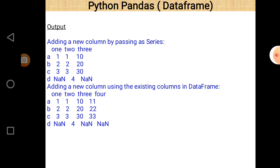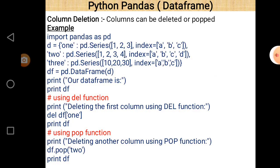Next is column deletion. If you want to delete a column there are two possible ways: use the 'del' function or use the 'pop' function. Both perform the same operation but the syntax is a little bit different.